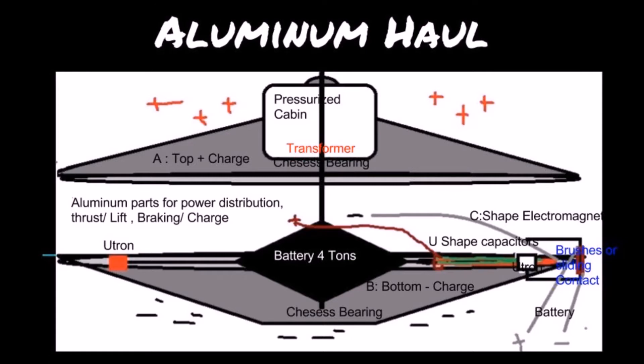While the positive comes off the battery into the U-shaped capacitor and splits. On the back side of the U-shaped capacitor, there is a brush or sliding contact. This all passes through the C-shaped electromagnetic field. The U-tron also passes through this same field. It spins like a fan.